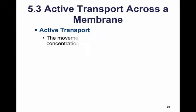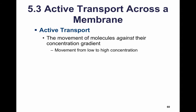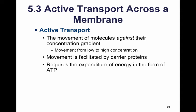We continue with active transport across a membrane. With active transport, we have a few characteristics. One, the molecules are going to move against their concentration gradient — that means from a low concentration area to a high concentration area. This is facilitated by carrier proteins, and it requires the expenditure of energy in the form of ATP.